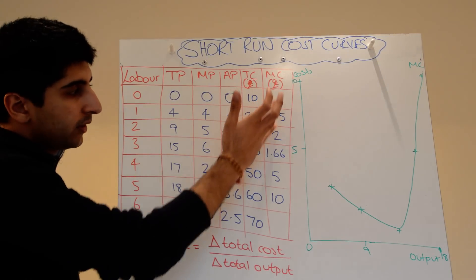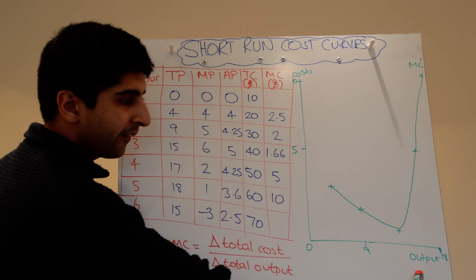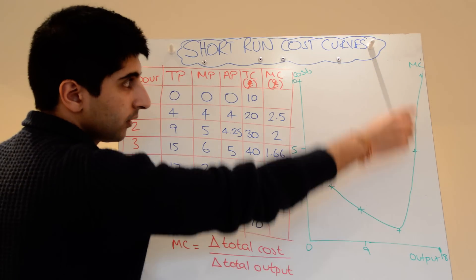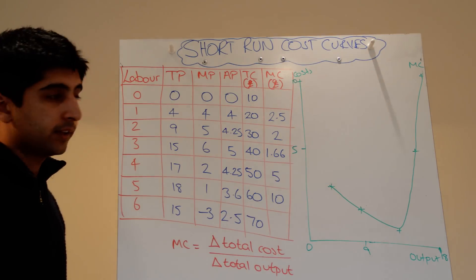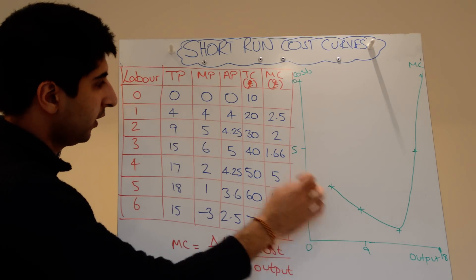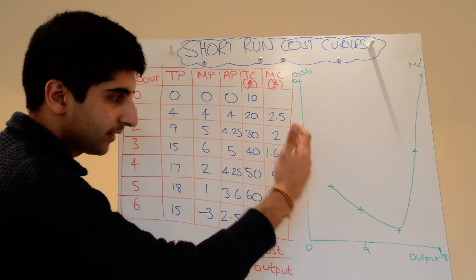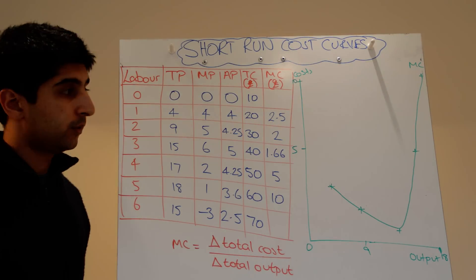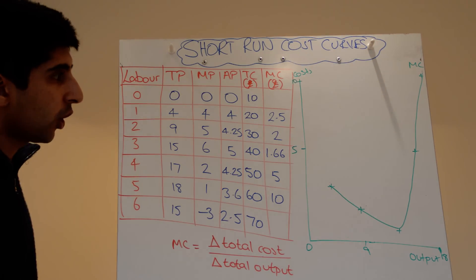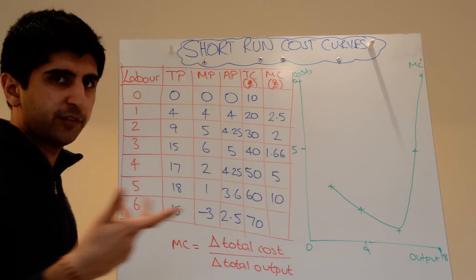When we actually plot these points onto a diagram — with output on the x-axis and cost on the y-axis — we get these points, these crosses. They correspond to the points on the right-hand side. At 4 units our marginal cost is 2.5, at 9 units it's 2, at 15 units it's 1.66, etc. We can then join the points up and make a marginal cost curve, and that's what a marginal cost curve looks like very roughly.